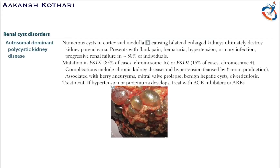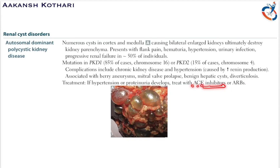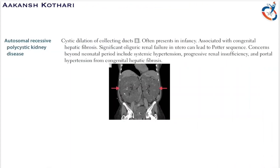If hypertension or proteinuria develops due to increased renin production, it can be treated by inhibition of angiotensin 2 — that is, by ACE inhibitors or ARBs (angiotensin converting enzyme inhibitors or angiotensin receptor blockers) — hence decreasing the production of angiotensin.